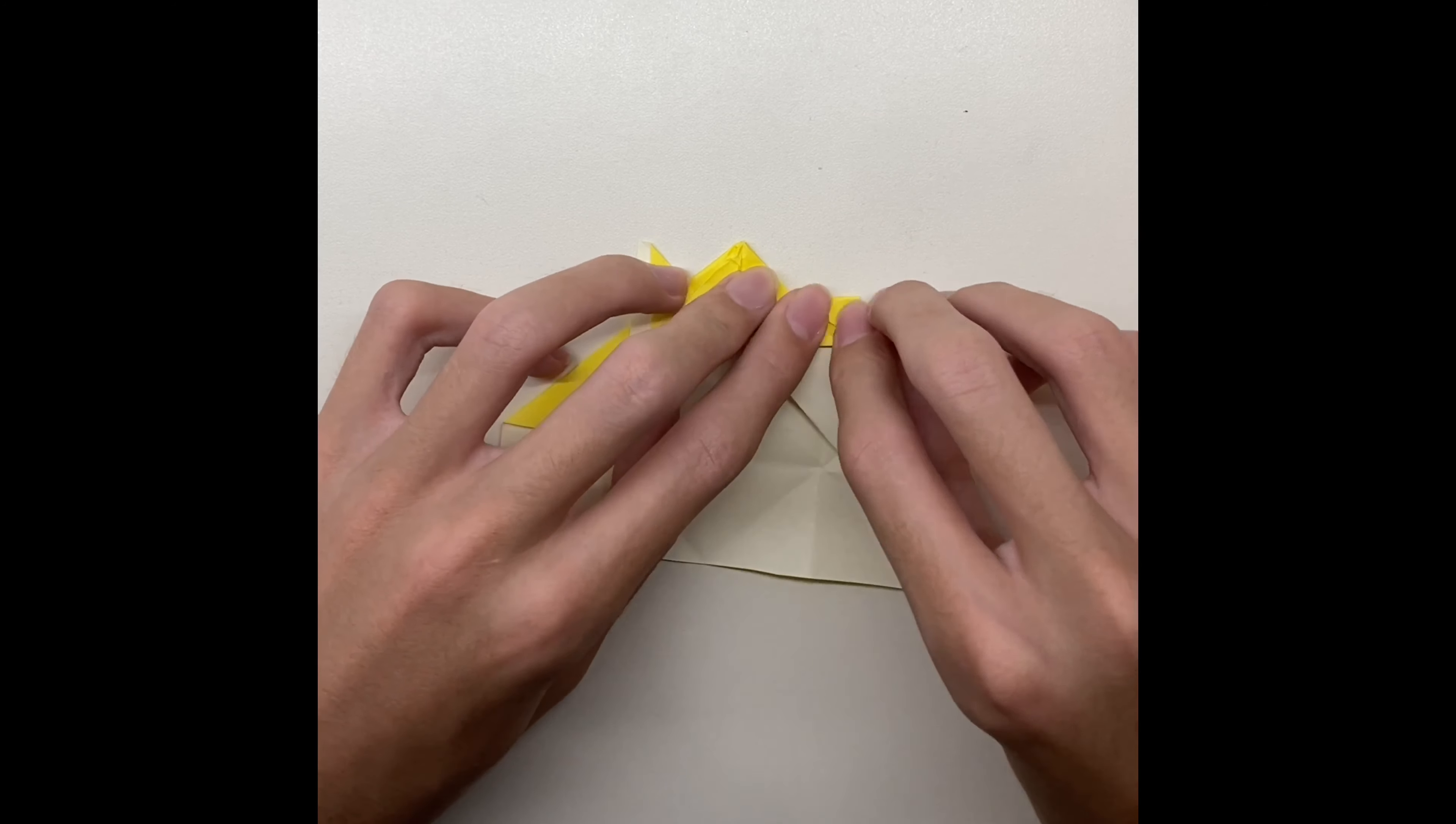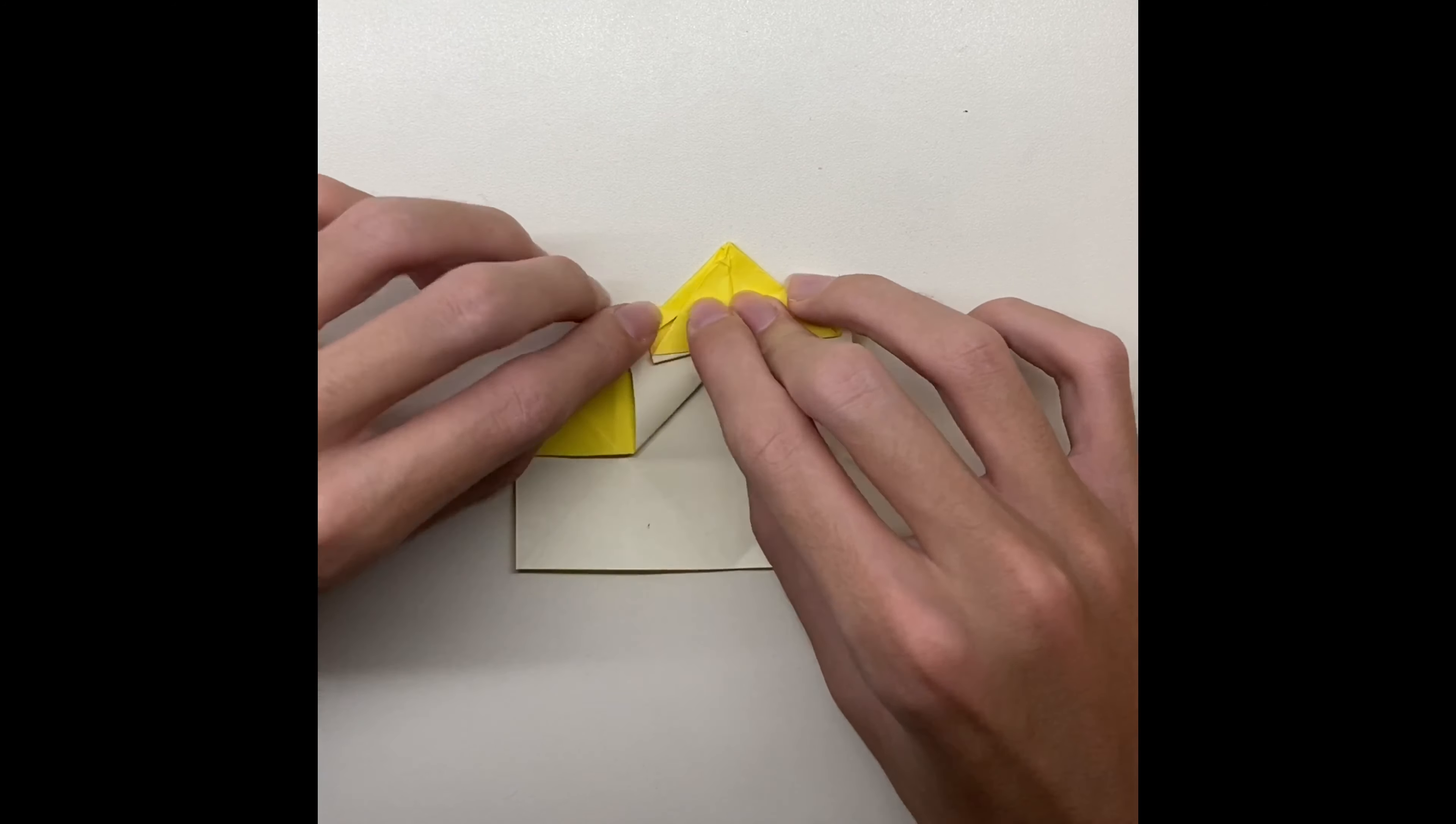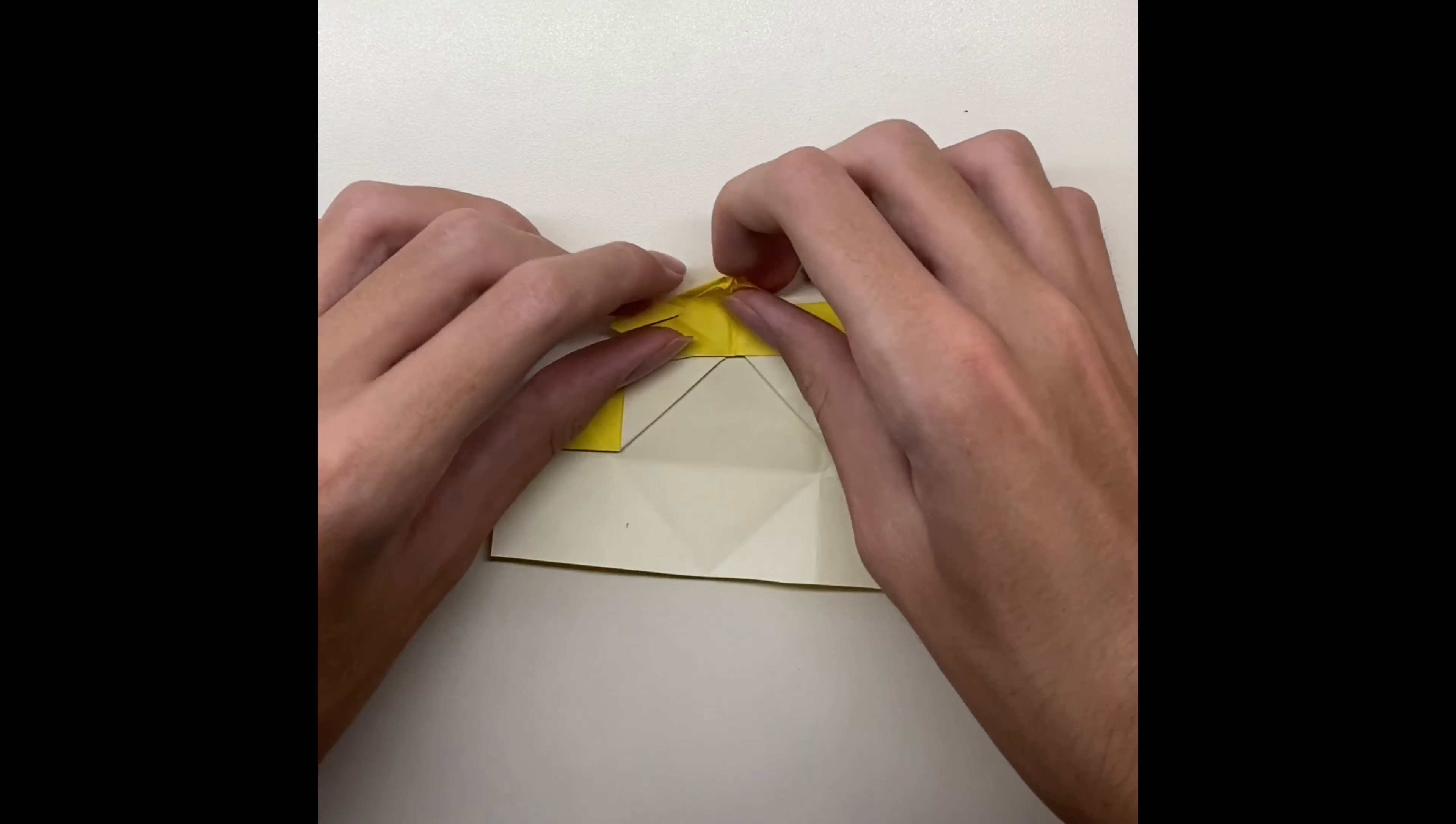Fold a little from both sides. After that, fold the triangle, and fold the paper in half.